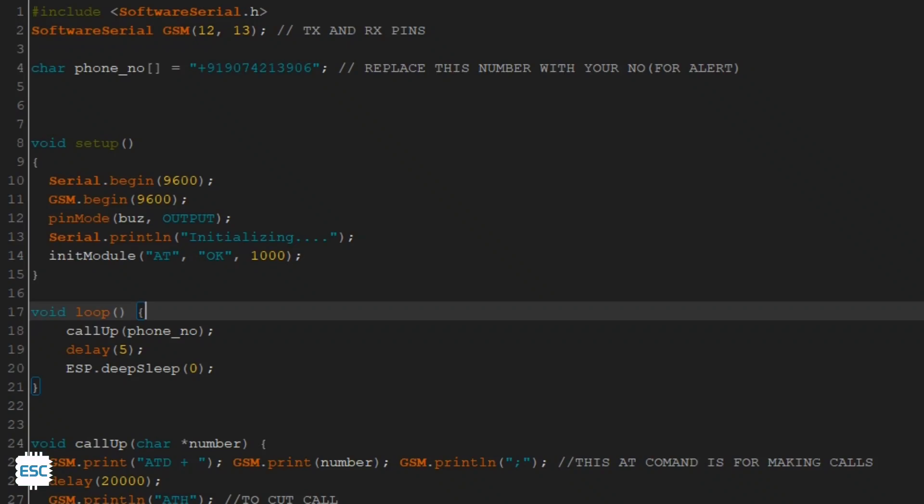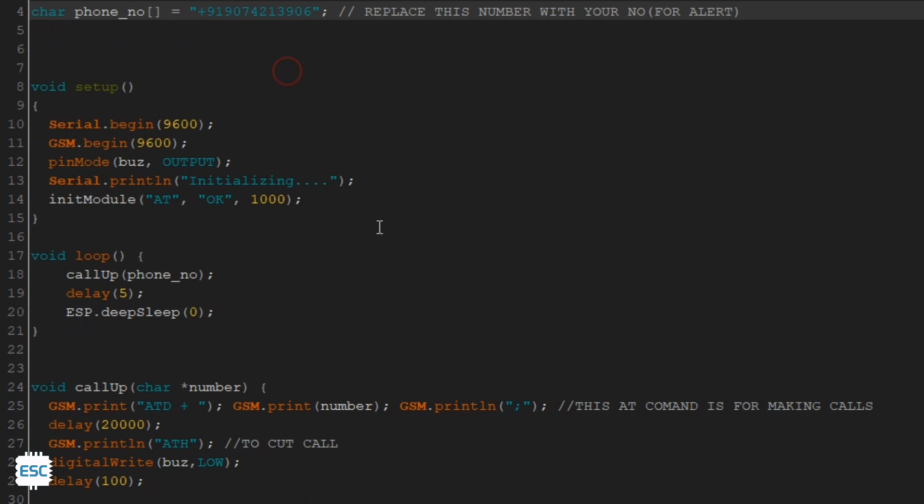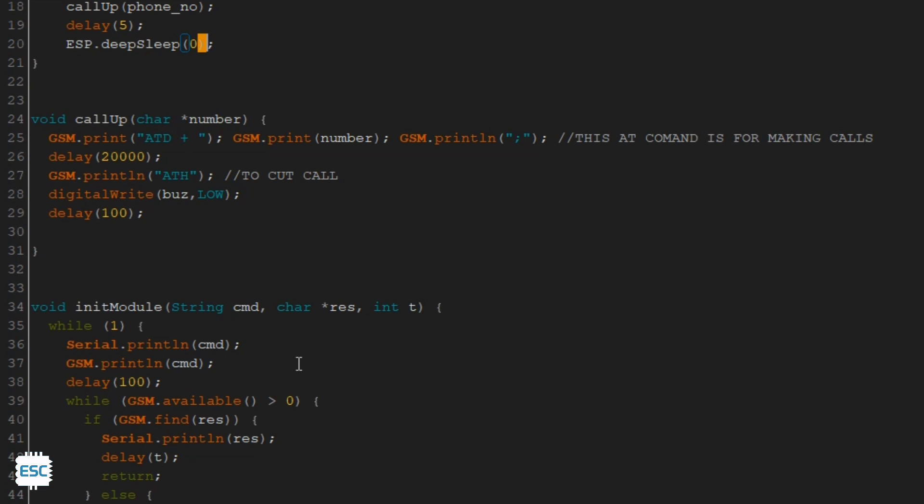That's all about the connection, now let's see the code. The SIM900 module works on AT commands, so these are the AT commands for making a call. So whenever the PIR sensor is triggered, the NodeMCU will wake up and make the call, then it will go back to sleep. So that's it.